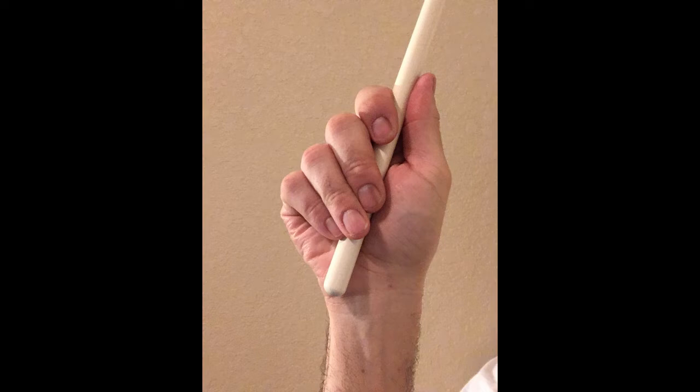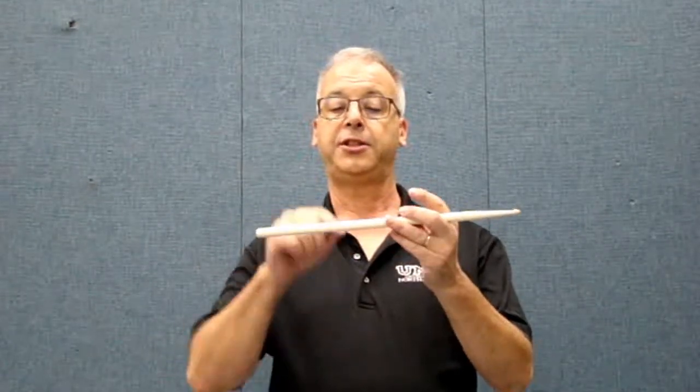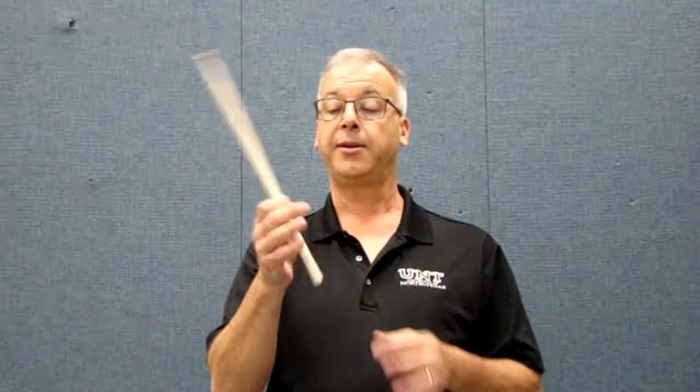Now let's form our own grip. We want to take our drumstick and if you want to think of it in thirds, we're going to take the bottom third which is about six inches up the drumstick and you're going to place your thumb and your first finger right across from each other making a fulcrum.